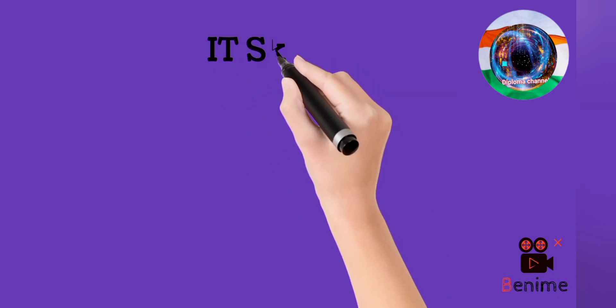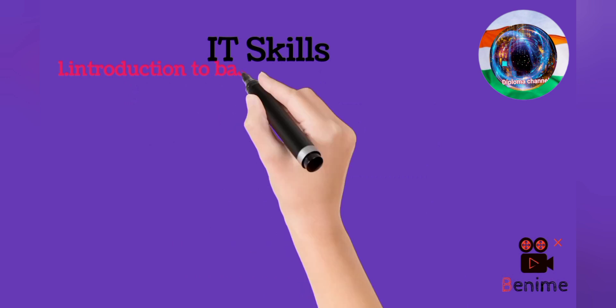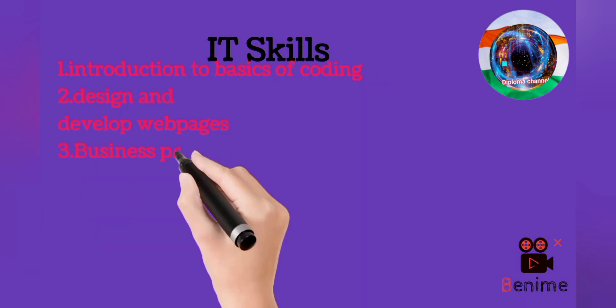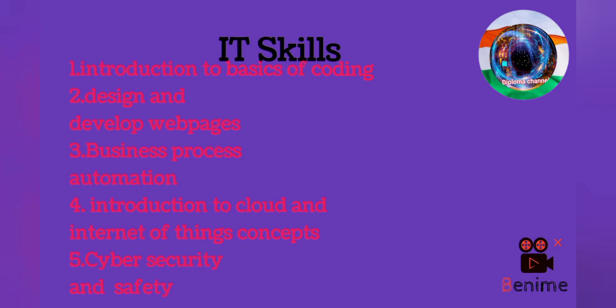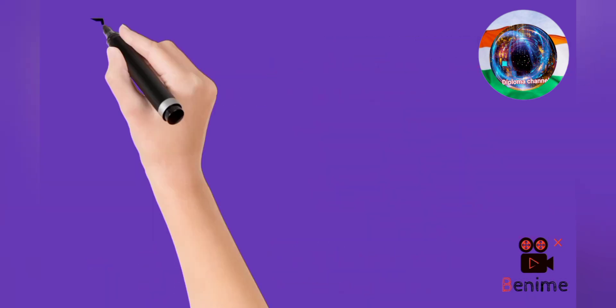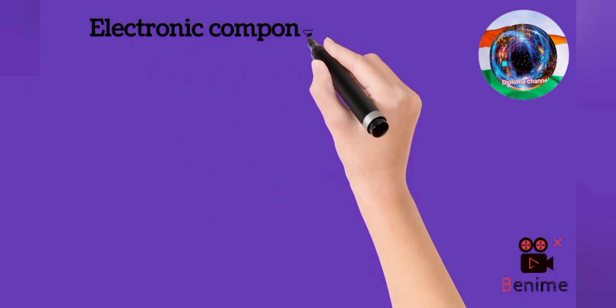The next subject is IT skills, which stands for information technology skills. This subject has five chapters. First chapter is introduction to basics of coding. Second chapter is design and develop web pages. Third chapter is business process and automation. Fourth chapter is introduction to cloud and IoT concepts. Fifth chapter is cyber security and safety.